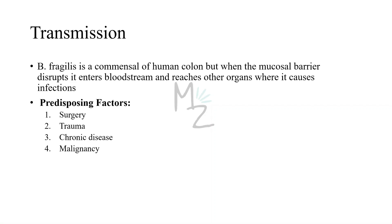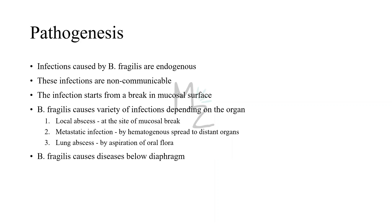Transmission: Bacteroides Fragilis is part of the human normal colonic flora — it is commensal there. But when there is a mucosal break in the intestinal mucosa, Bacteroides Fragilis gets the chance to enter the bloodstream and reach other organs where it can cause infections. The predisposing factors that can cause mucosal barrier disruption are surgery, trauma, chronic disease, or malignancy. Infections caused by it are endogenous and not communicable.